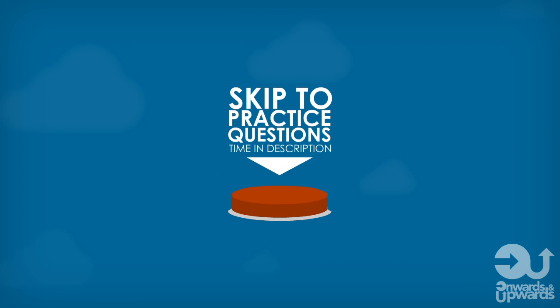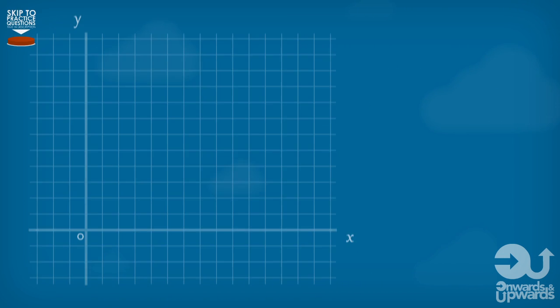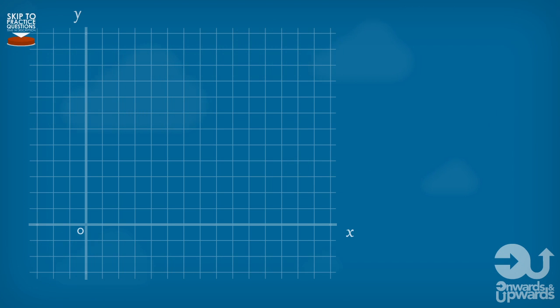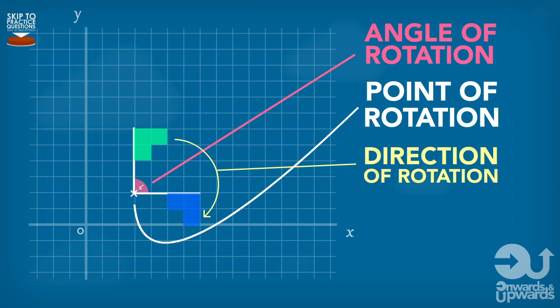Transformations: rotations. With rotations there are three key bits of information that we need to know. First, the angle of rotation, then the point of rotation, and also the direction of the rotation.